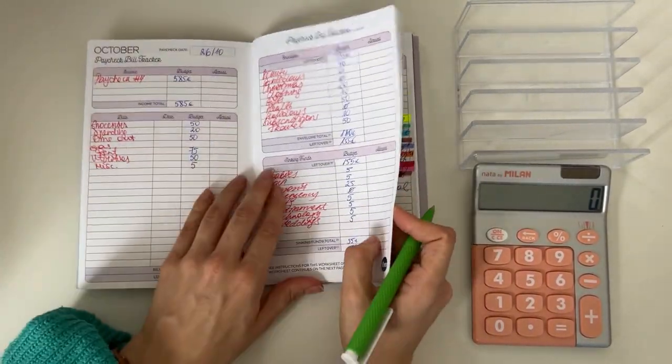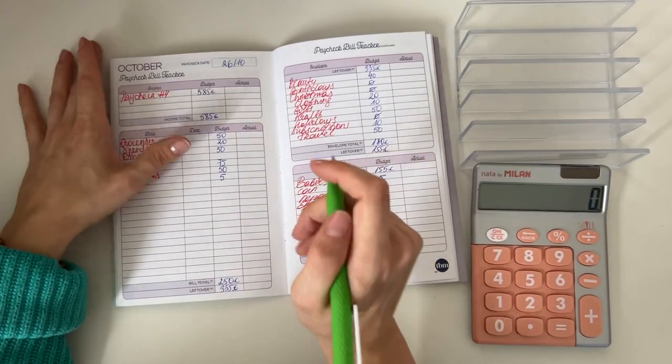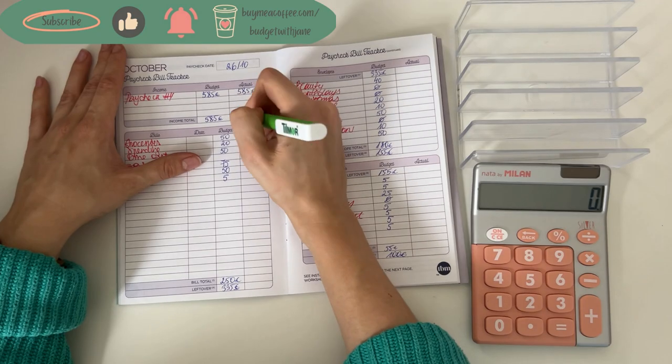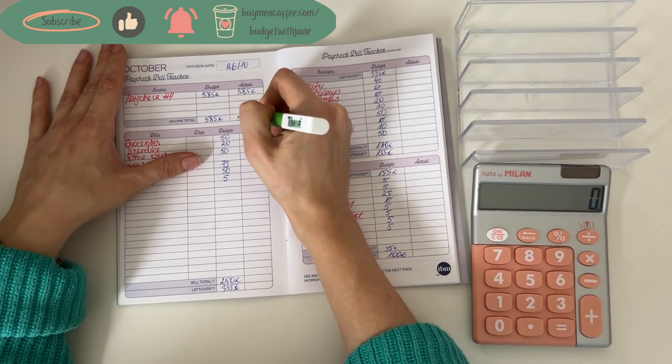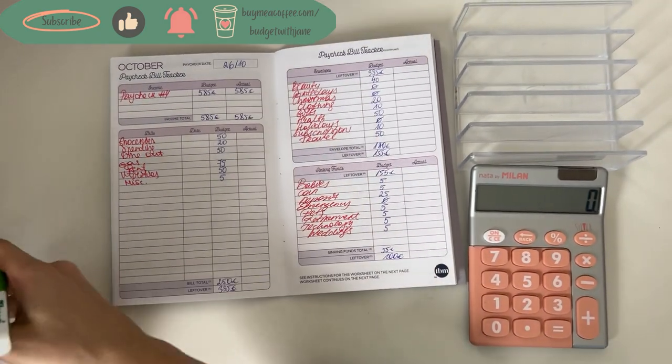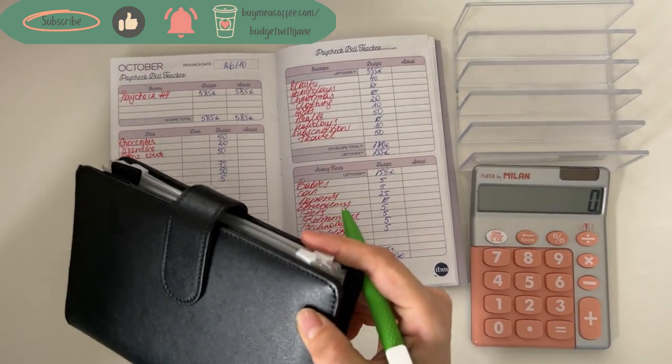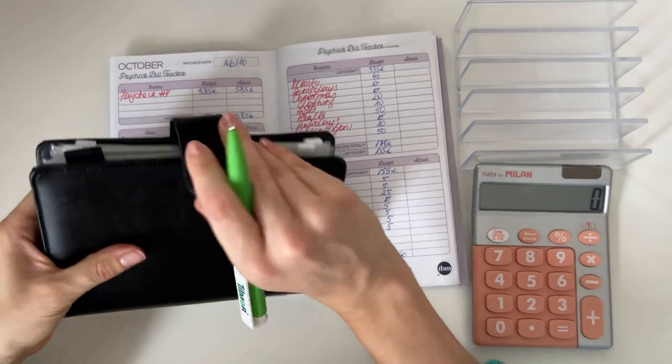So let me quickly flip through the budget and write the actual amount. So we had 585 euros to work with for this week.